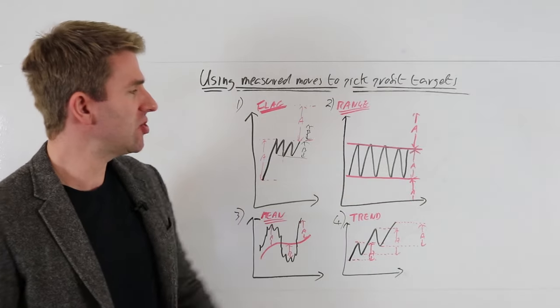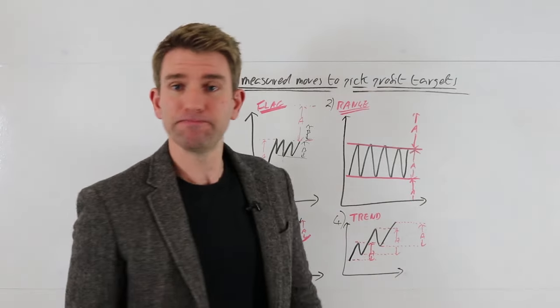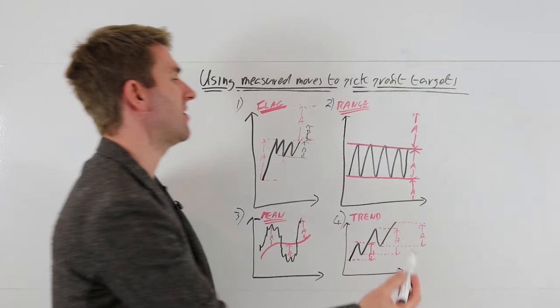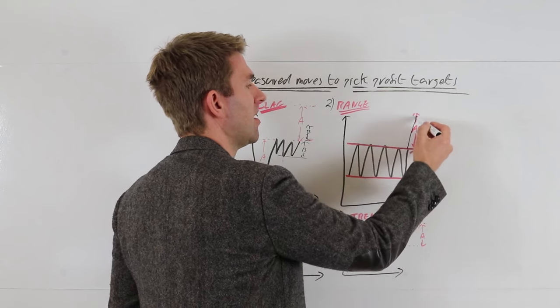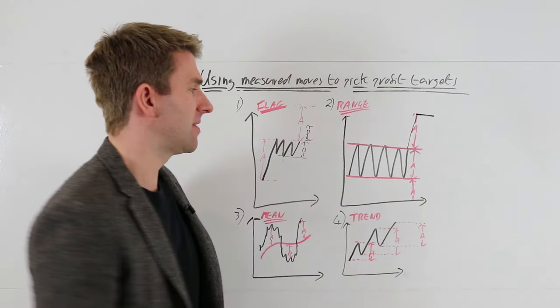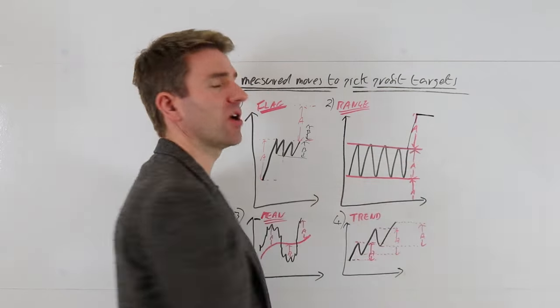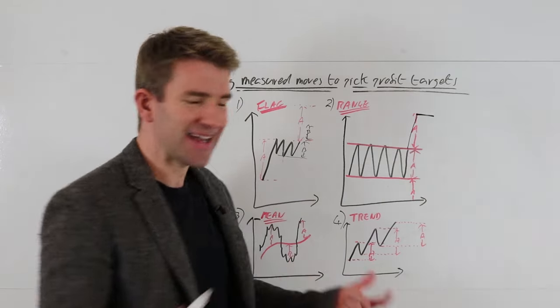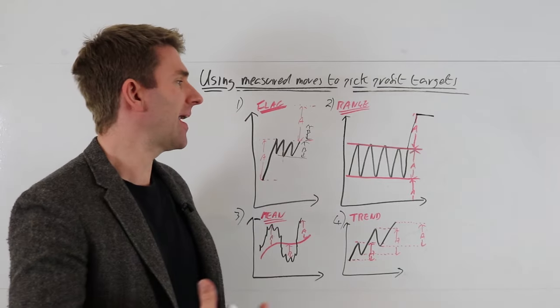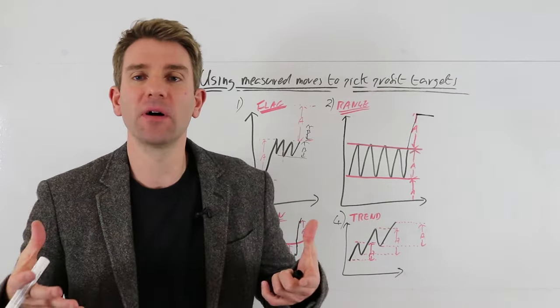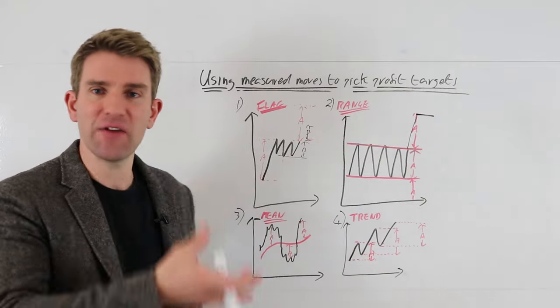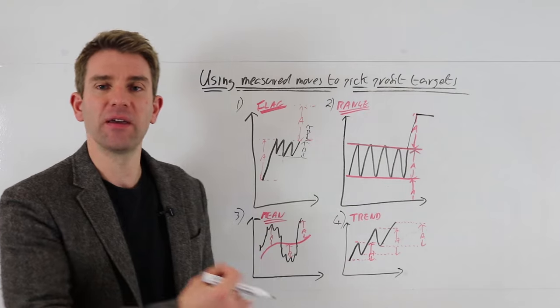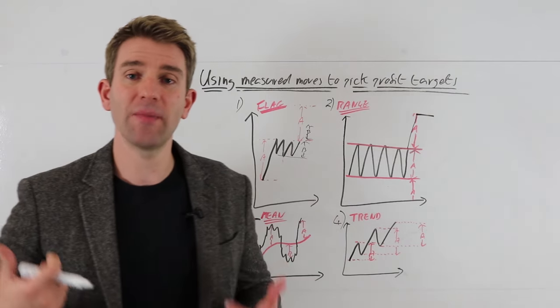So number two is range. Range is, this is a pretty simple one, width of the range, basically, from high to low is A. And the measured move would say that if we broke out to the upside here, we're expecting to move up to the same distance. So if that was 100 pips, you'd expect 100 pips move to the upside and similarly to the downside. Now, obviously, sometimes we don't get this, but it's a good benchmark. We're not saying strictly for every single trade we do, we're going to put a hard limit in there and it's that or nothing because that's just going to be a losing proposition over time. However, it gives us the order of magnitude.